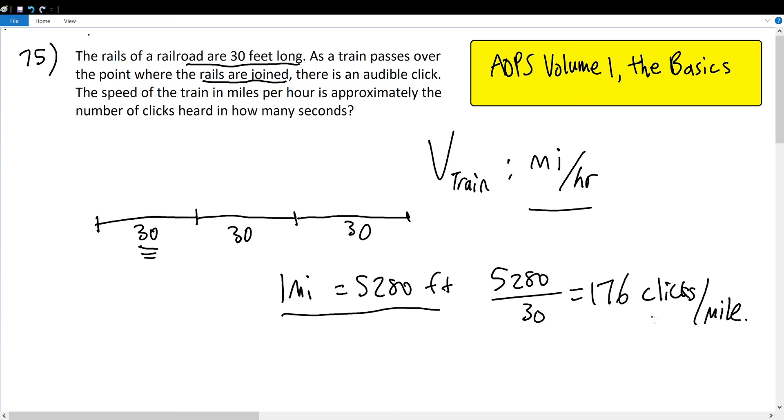And we're almost done here. Since we're told that 176 clicks are in one mile, then how many clicks are there in x miles? Well, that means there are 176 times x clicks in x miles.